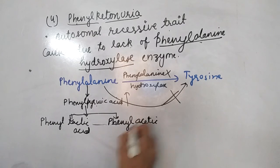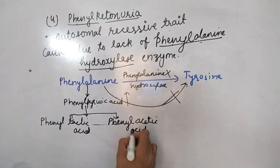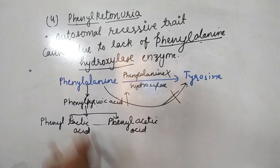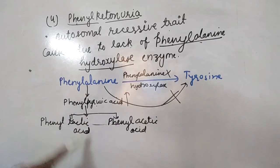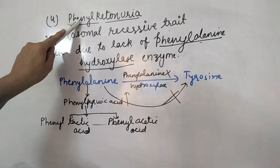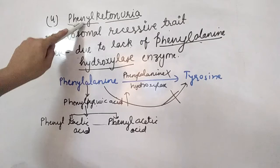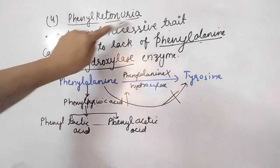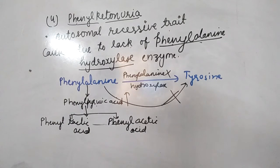If the kidneys do not absorb these substances, they are excreted in the urine. This excretion in urine is the basis for the name Phenylketonuria.